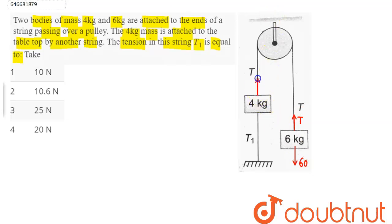For this 4 kg block we have T upwards, weight of this block 40 downwards, and the tension in this string T1 also in downward direction.